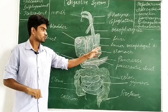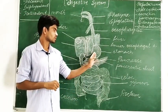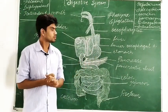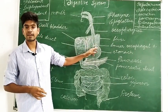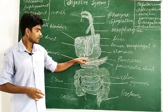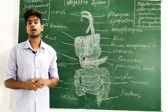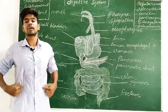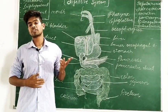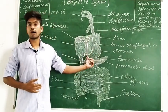The stomach is the center of the digestive system and has three major parts. The first part, where the esophagus opens, is called the cardiac region. The curved region is called the fundic region, and where it opens into the duodenum is called the pyloric region. The stomach is located in the upper left portion of the abdominal cavity.